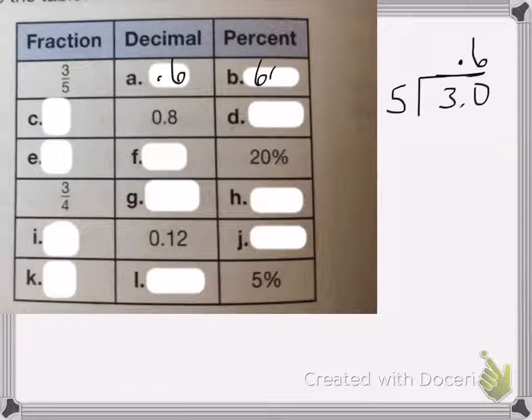That means the percent is going to be 60%. If you have the number in this place value, you know it's going to be, you're going to have to add a zero to it. So 60%.